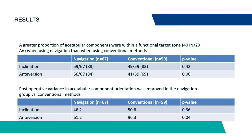Here you can see our proportion of acetabular components within the safe zone. In both inclination and anteversion, they trended towards improvement in the navigation group compared to the conventional group. Although this came close in the anteversion group, it only trended towards significance and did not reach it. Postoperative variance in acetabular component orientation was improved in the navigation group as well, and this actually reached significance in the anteversion group comparing the navigation and control groups.